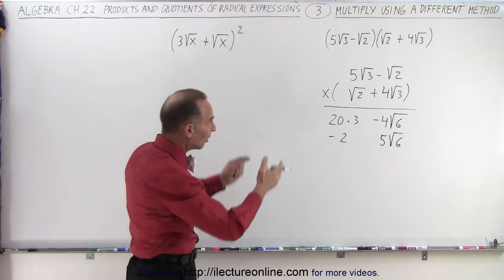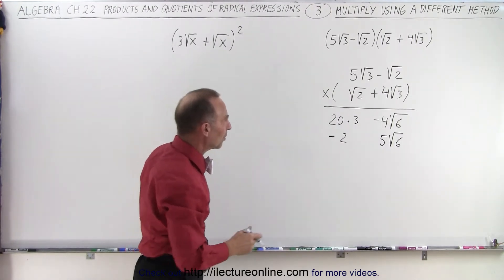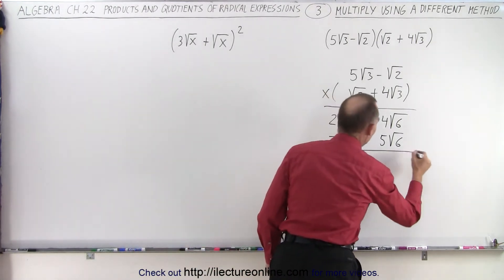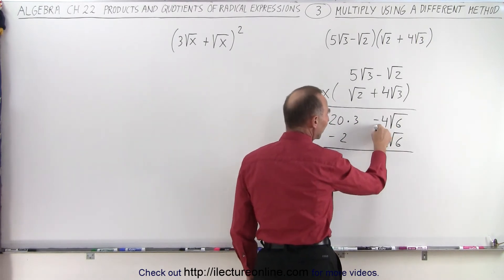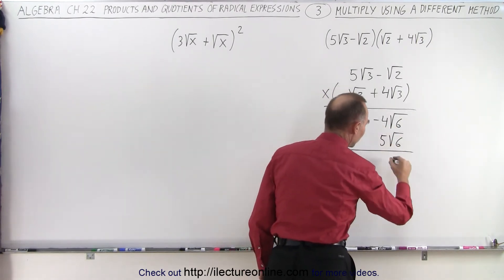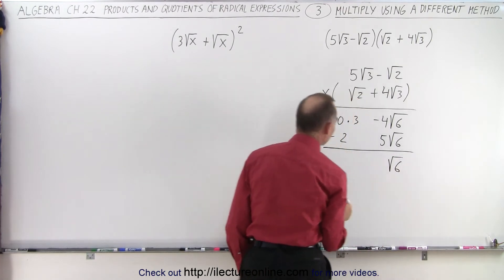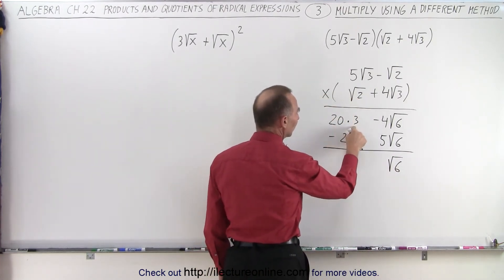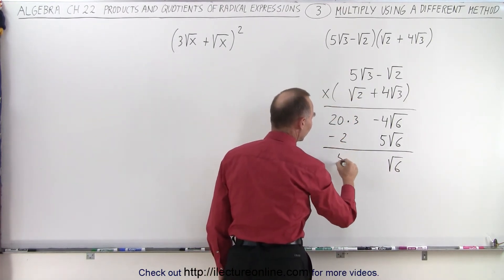So we've put things in particular columns as we multiply them. Now we can add them together. We have 5 minus 4, which gives us 1 times the square root of 6. We don't have to write the 1. And 20 times 3 is 60 minus 2 would be 58.